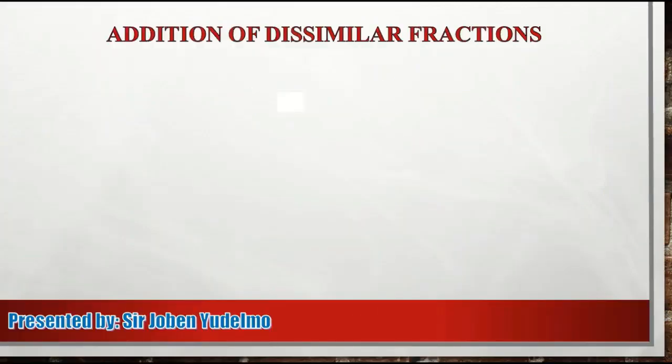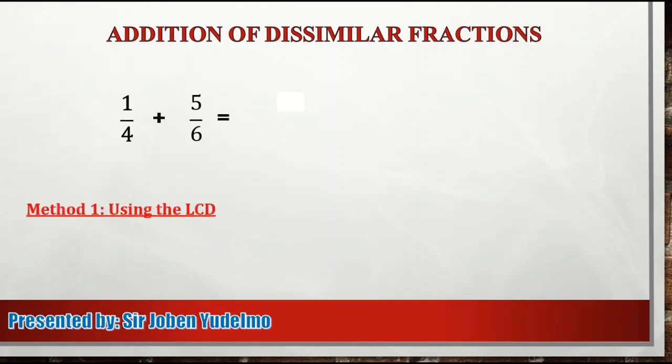Next is addition of dissimilar fractions. Paano naman mag-add kung magkaiba ang denominators ng mga fractions? Halimbawa, 1 fourth plus 5 sixth is equal to. So maraming paraan sa pag-add ng mga dissimilar fractions. Isa na dito ay ang paggamit ng kanilang LCD.